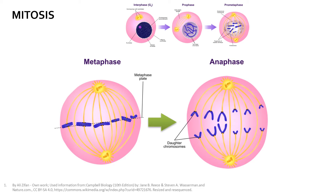When the microtubules are firmly connected to the centromeres and the chromosomes are aligned on the central axis of the cell, anaphase begins. Here, the chromosomes are pulled apart by the spindle apparatus and begin to move towards either side of the cell.